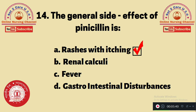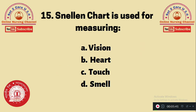Question 15: Snellen chart is used for measuring — A. Vision, B. Heart, C. Touch, D. Smell. The Snellen chart is used to measure visual acuity. The correct answer is option A.